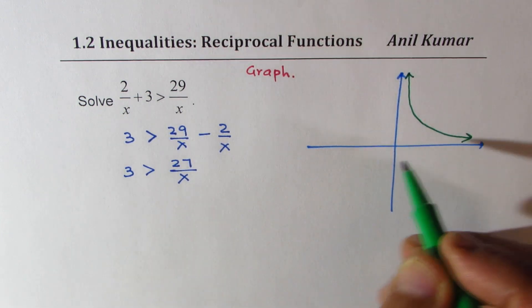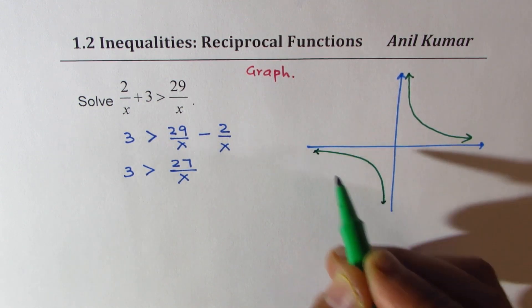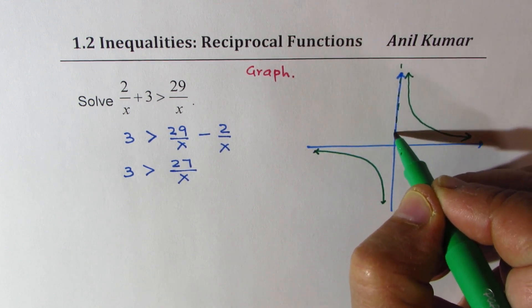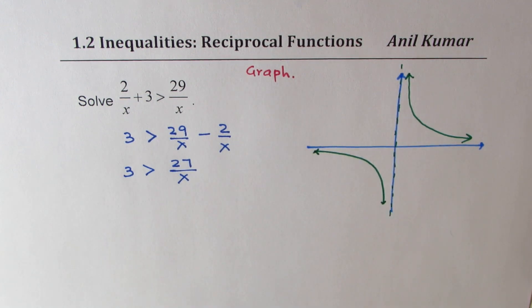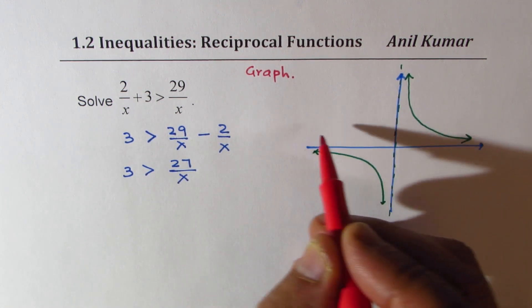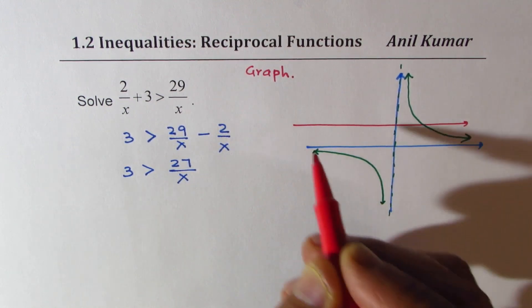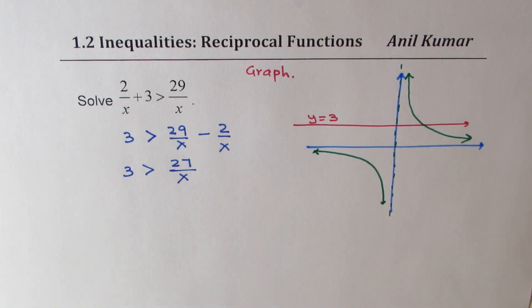And definitely x is not equal to 0. We have a vertical asymptote right there. Now the graph for 3 should be something like this, y = 3. Let me just sketch a line here. Let's say this is y = 3.